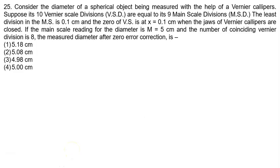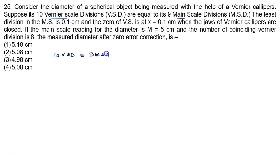Consider the diameter of the spherical object being measured with the Vernier caliper. Suppose 10 VSD equals 9 MSD — that is, 10 Vernier scale divisions equal 9 main scale divisions. The least division in the main scale is 0.1 cm.